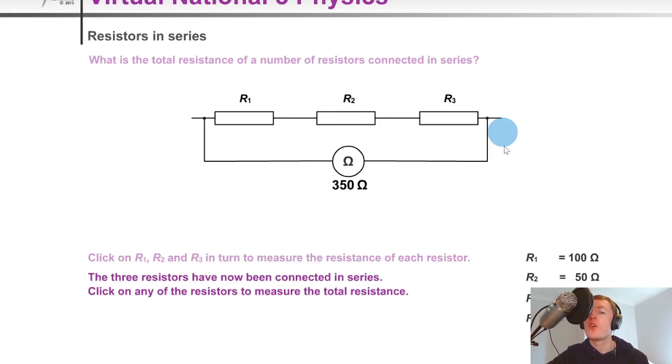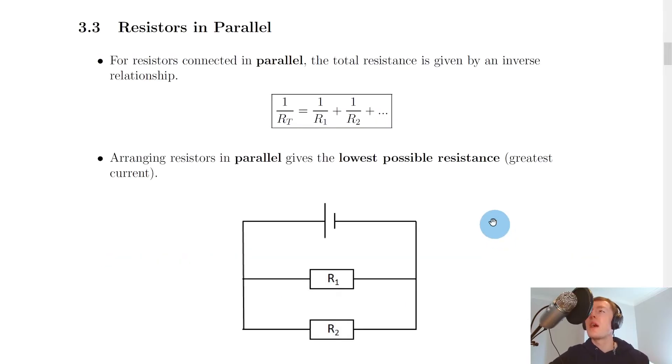If I was to take an ohmmeter and measure across all of those, we would get a total resistance value of 350 ohms, and that just comes from adding the 100, 50, and 200 ohms.